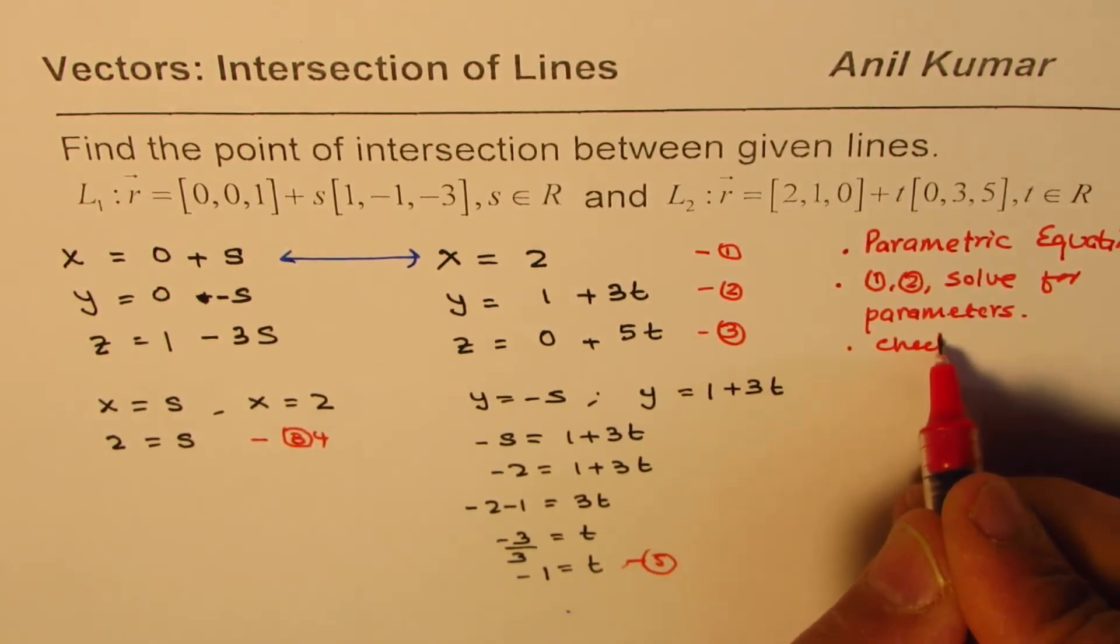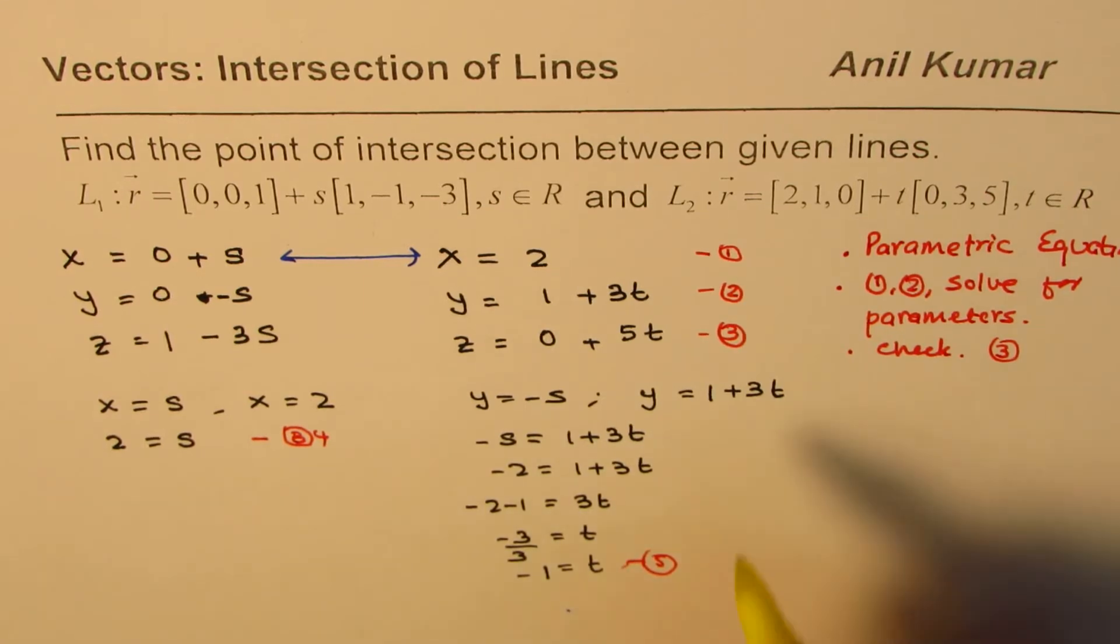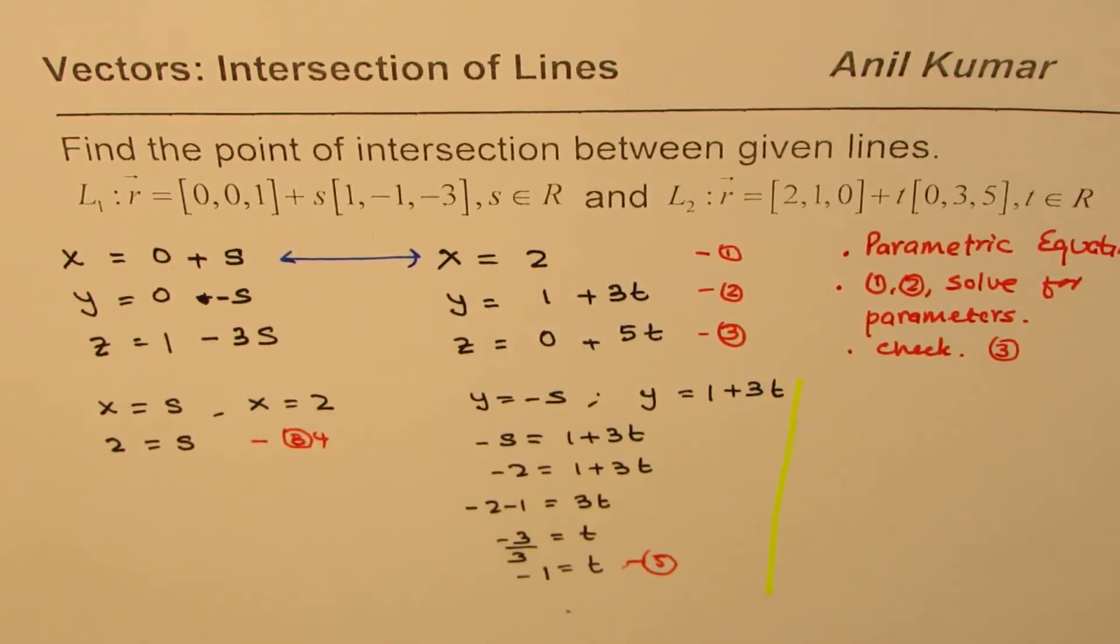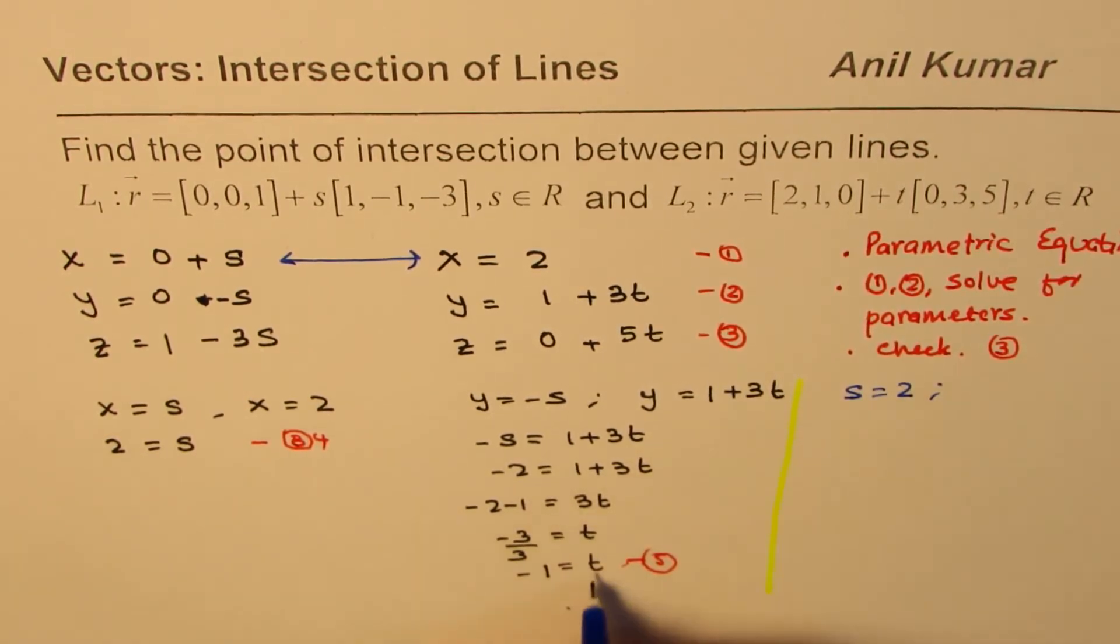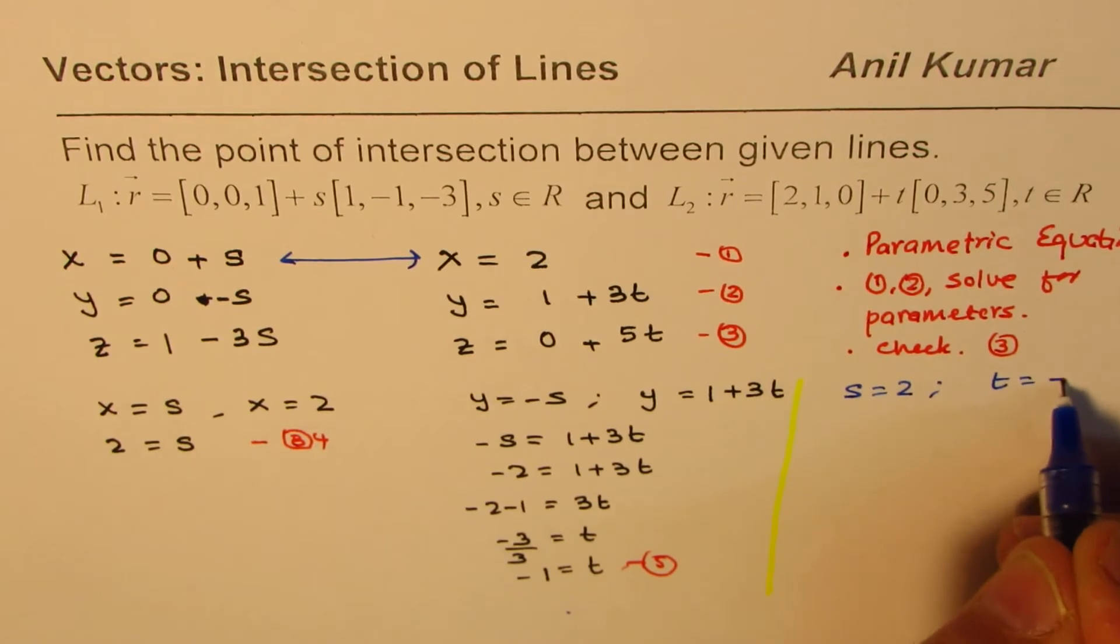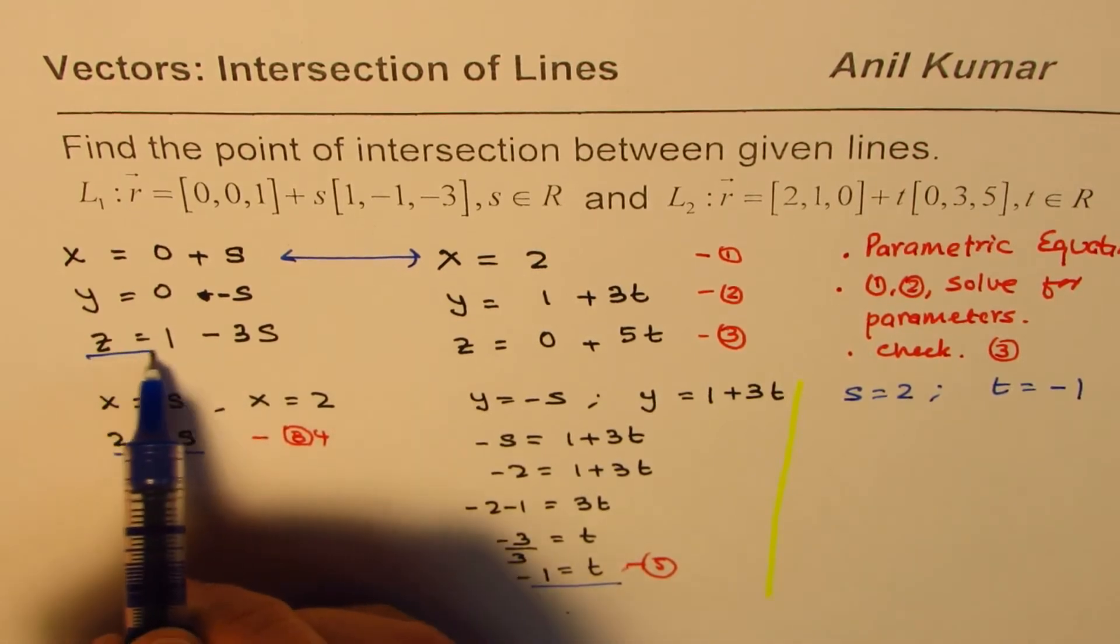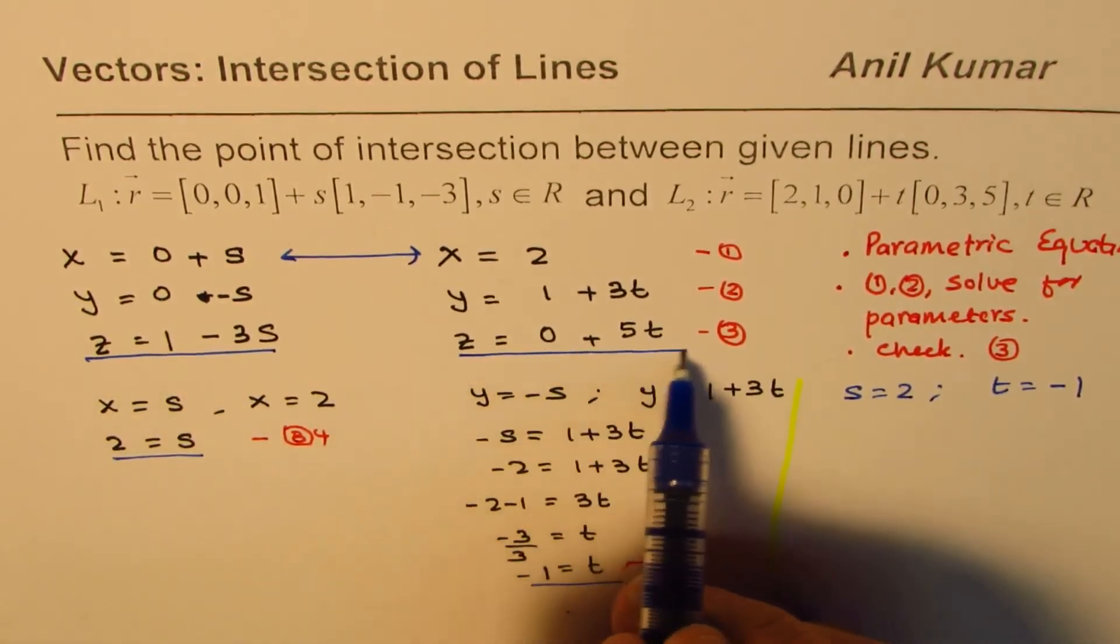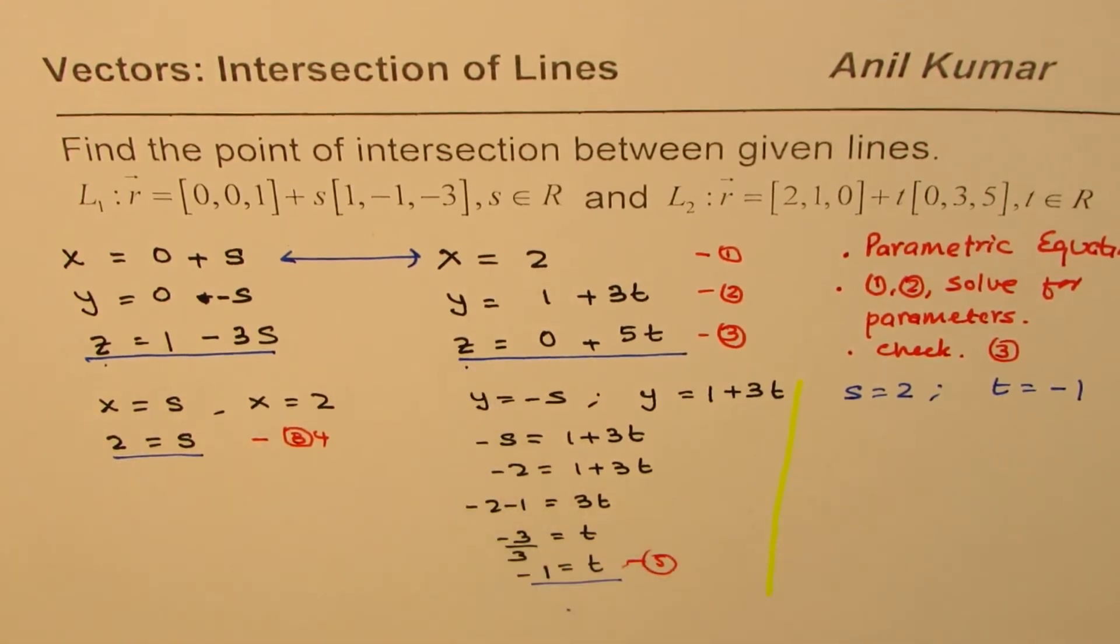Now, we will check the third equation whether these values work or not. So what we know here now is that s equals 2 and t equals minus 1. So these are the two values that you have just found. Now, in the third equation, we will find the value of z. And if we get exactly the same value, in that case, we have a point of intersection since that point is common to both the lines.